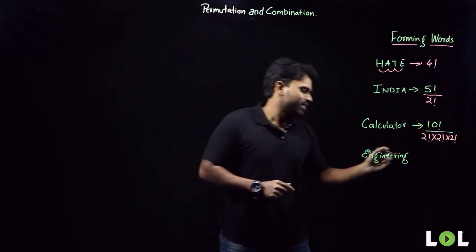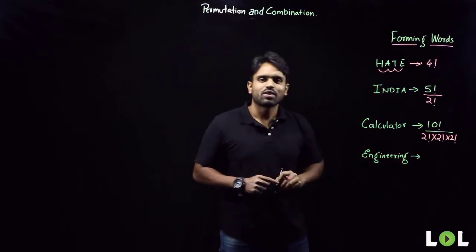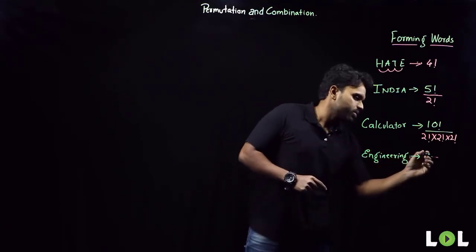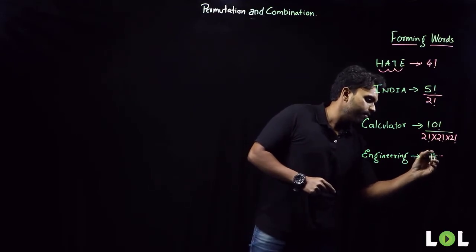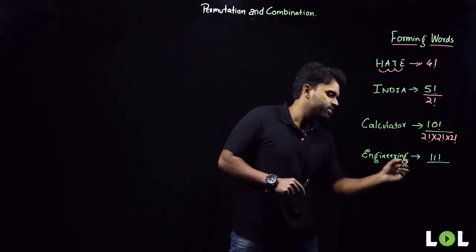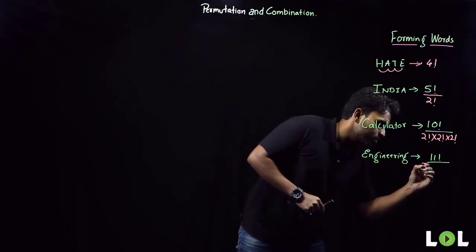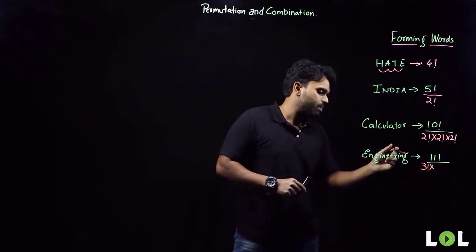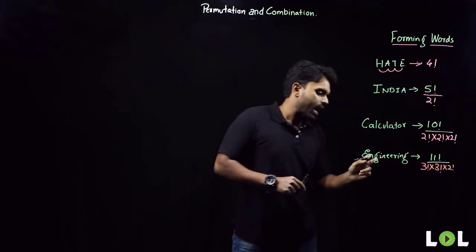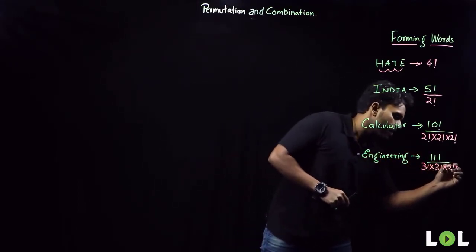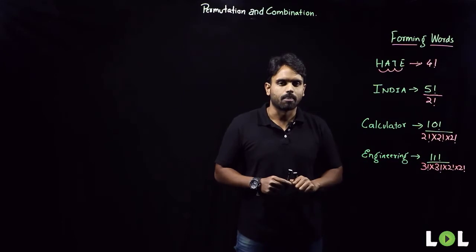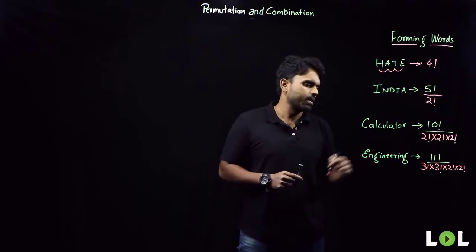Now let's take the word ENGINEERING — that consists of eleven letters. Eleven letters can be rearranged in eleven factorial ways. E is repeating three times, so divide by three factorial. N is also repeating three times — another three factorial. G is repeating two times — two factorial. I is repeating two times — another two factorial. So the answer is 11! ÷ (3! × 3! × 2! × 2!).